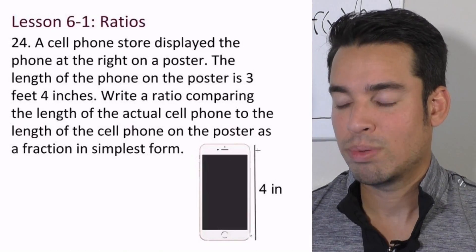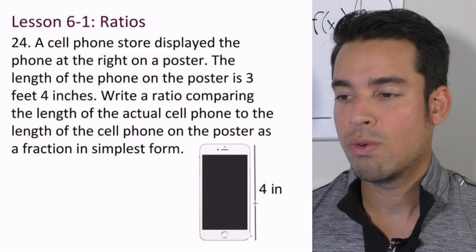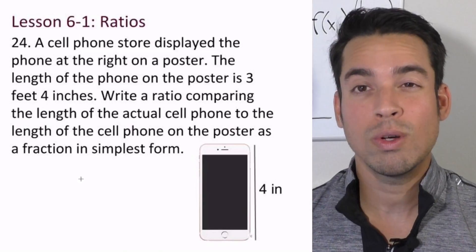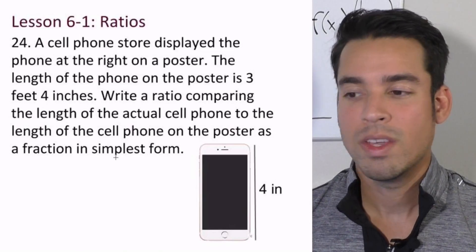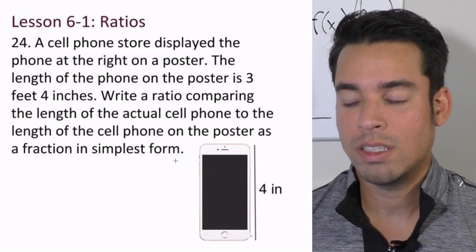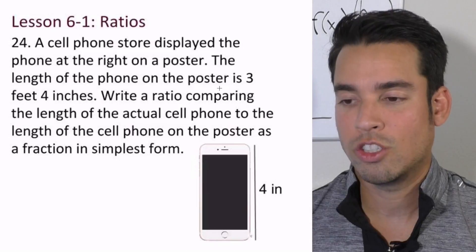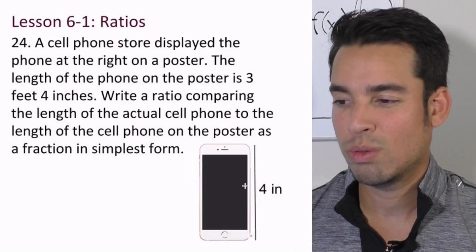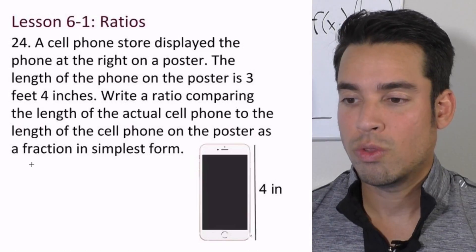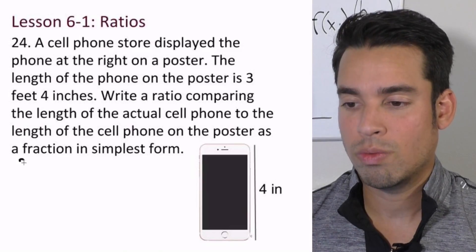So again, we've got 4 inches and this actual poster is 3 feet 4 inches. First of all, if we're going to have a ratio comparing them, they need to be all in the same units. So we're either going to convert both to feet or this one to inches completely. It's easier since this one is in inches to make this one in inches. So 3 feet 4 inches—3 feet is going to be 3 times 12 inches, right?